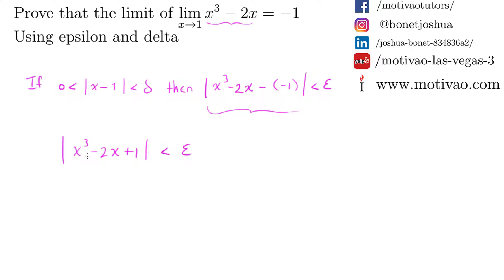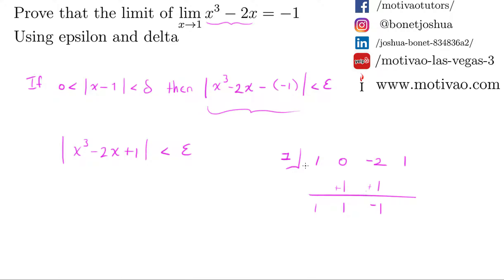I'm going to use synthetic division to find the factorization. I want to factor out (x minus 1), so I use positive 1. I write all the coefficients of x³ minus 2x plus 1: that's 1, 0 for x², negative 2 for x, and 1 for the constant. Carrying through the synthetic division gives 1, 1, negative 1, and remainder 0. So this equals the absolute value of (x minus 1) times (x² + x minus 1).